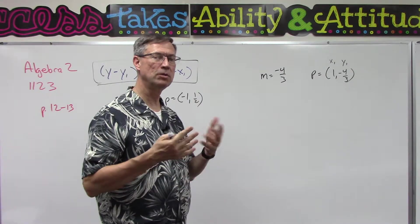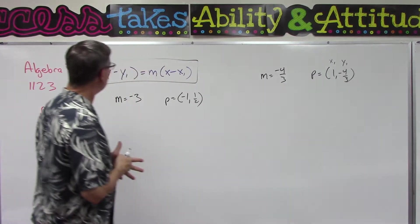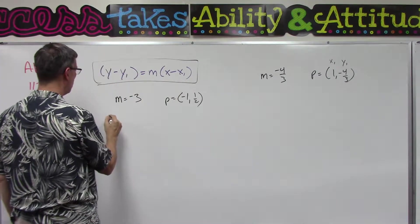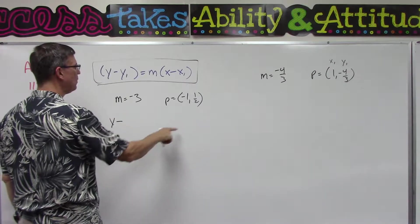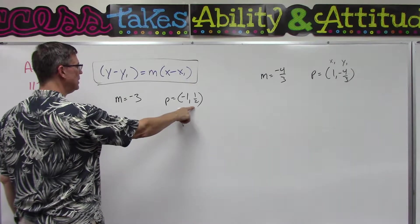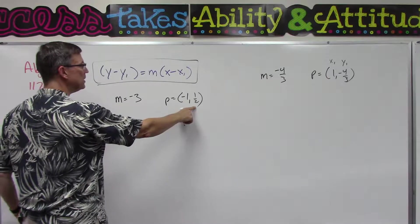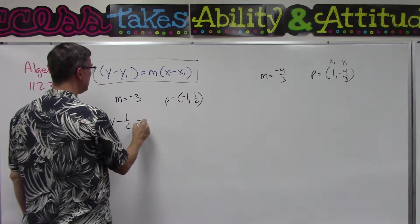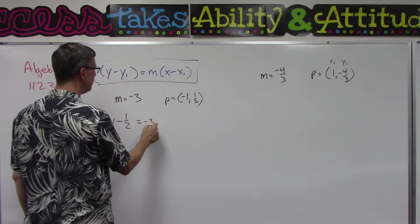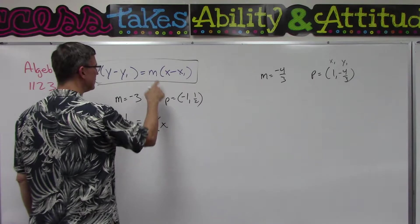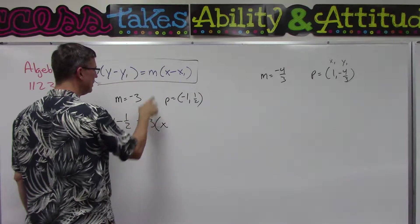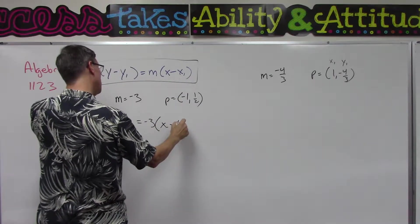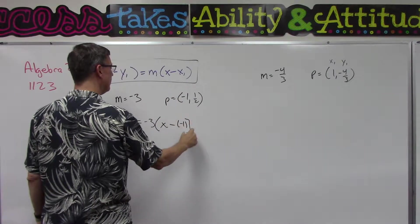Let's take this equation right here: y minus - no, what's the y1? y1 is the second value here - so minus 1/2 equals negative 3 parentheses x. So I just took the negative 3, plugged it in for m, keep the x minus, and then x1 is the negative 1.